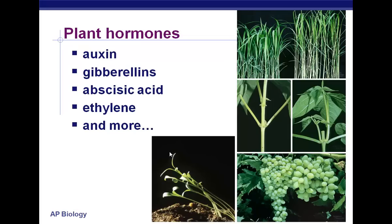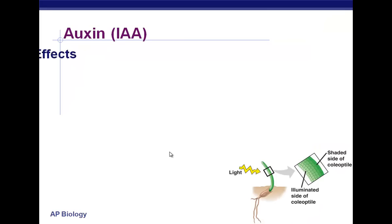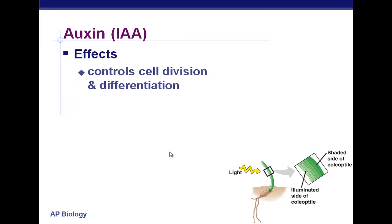What these hormones do, to a large extent, is affect the height or length of the plant — stem elongation. They might deal with fruit ripening, whether a leaf stays on a tree or falls off, and how the plant grows overall. The auxins affect phototropism. If you've ever seen a plant leaning towards the light, it's the auxins that explain how that happens. Starting with auxins: they control cell division and differentiation.